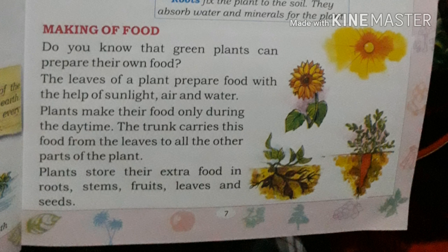When food is made in the leaves, the plants store the extra food in the roots, stems, fruits, leaves, and seeds. Some of the things we eat — like carrots and radish — are actually the extra food stored by the plant.